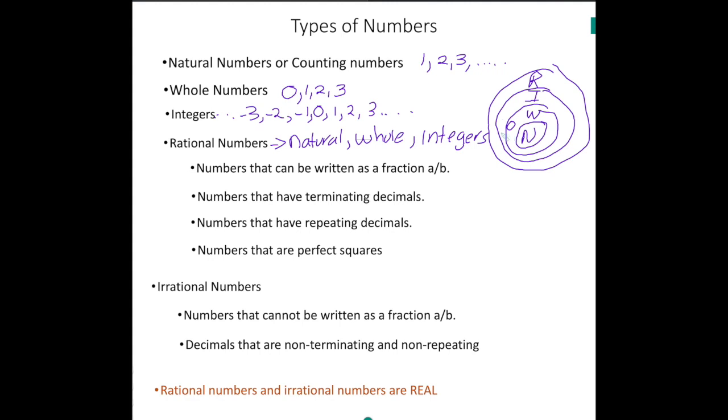However, there are other types of numbers that can be rational numbers. Numbers that can be written as a fraction is a rational number. Because to build a fraction, you have to either use a natural number, a whole number, or an integer.